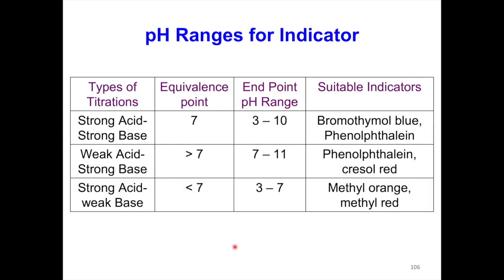Each type of titration has a different equivalence point, end point pH range, and suitable indicators. For strong acid/strong base, the equivalence point is pH 7, the end point pH range is 3 to 10, and suitable indicators are bromothymol blue or phenolphthalein. For weak acid/strong base, the equivalence point is above pH 7, the end point pH range is 7 to 11, and the suitable indicator is phenolphthalein. For strong acid/weak base, the equivalence point is below pH 7, the end point pH range is 3 to 7, and suitable indicators are methyl orange or methyl red.